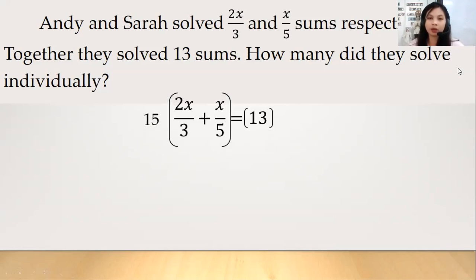Okay, so siyempre gagawin natin kung pareho natin, i-divide and then we multiply sila, yung parehong side. So 15 divided by 3 is 5 times 2x is equals to 10x po. Next, 15 divided by 5 is equals to 3 times x is 3x. And then 13 times 15 is 195 po.